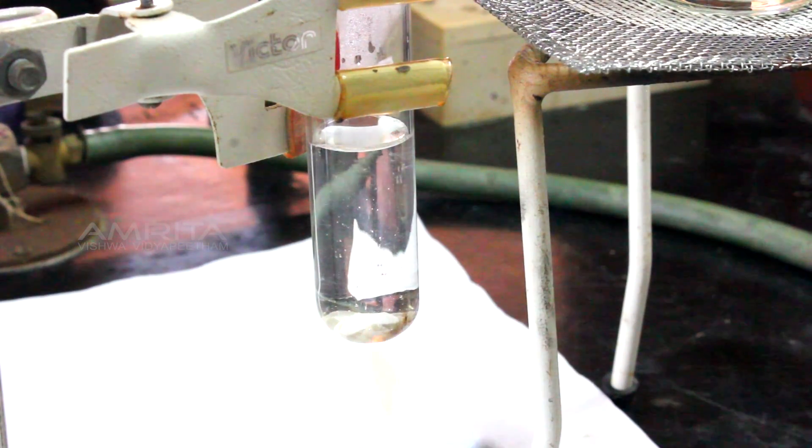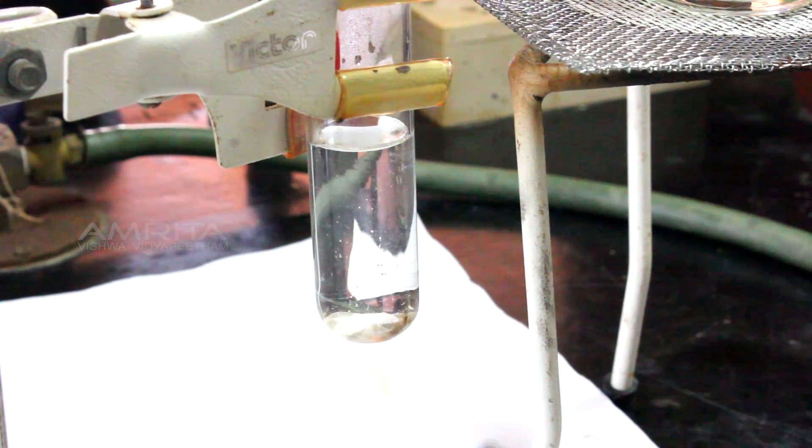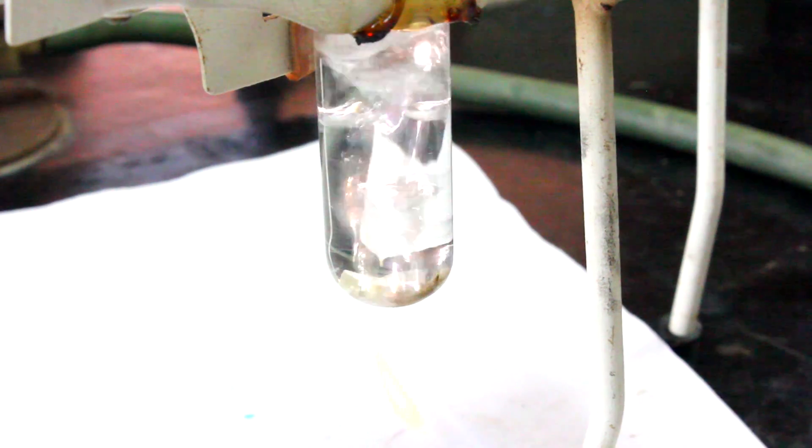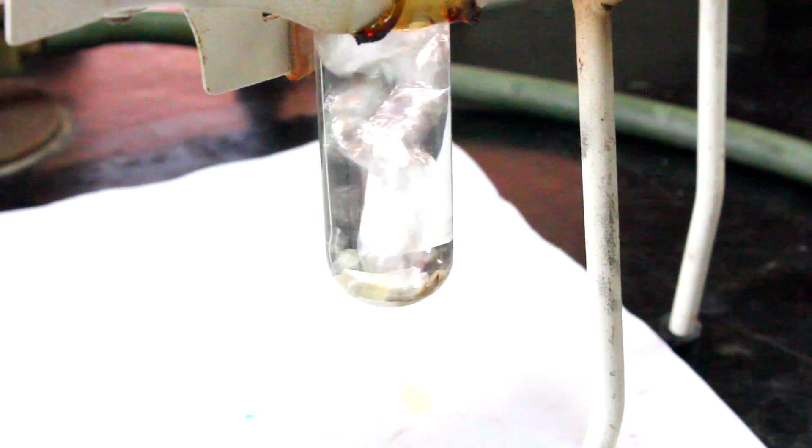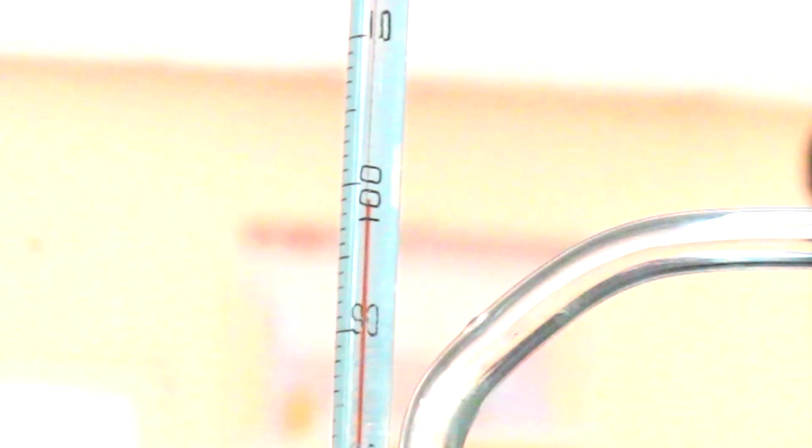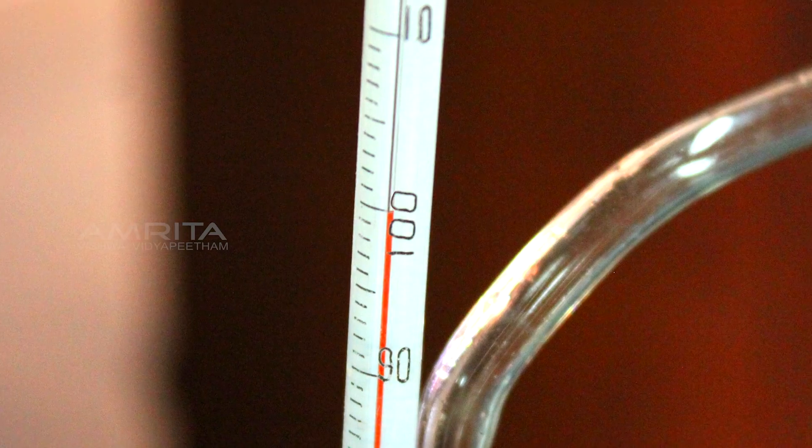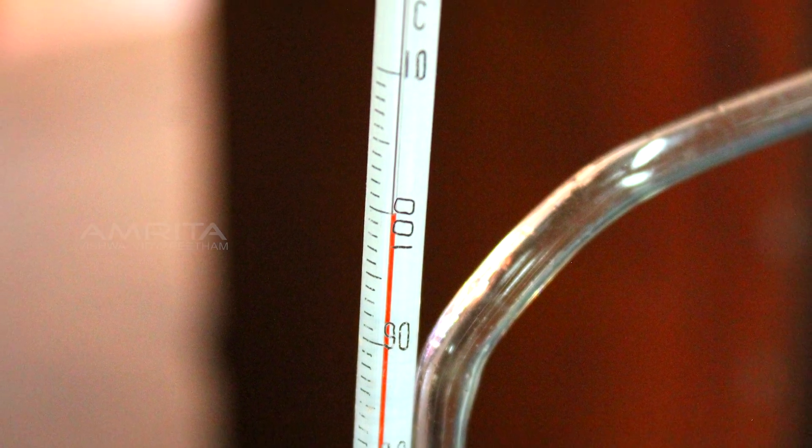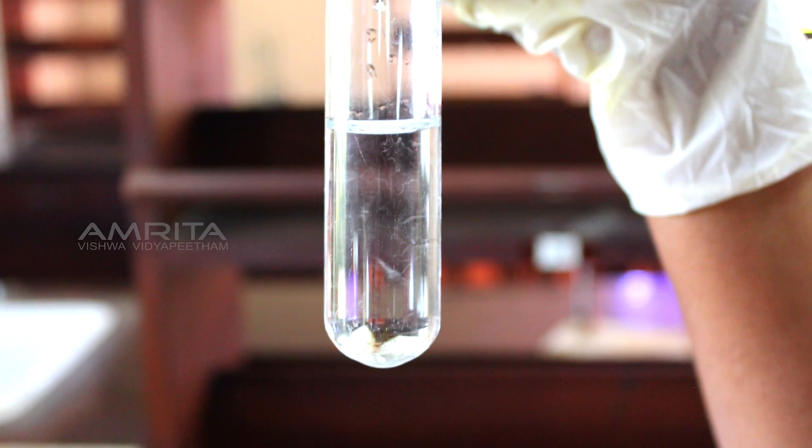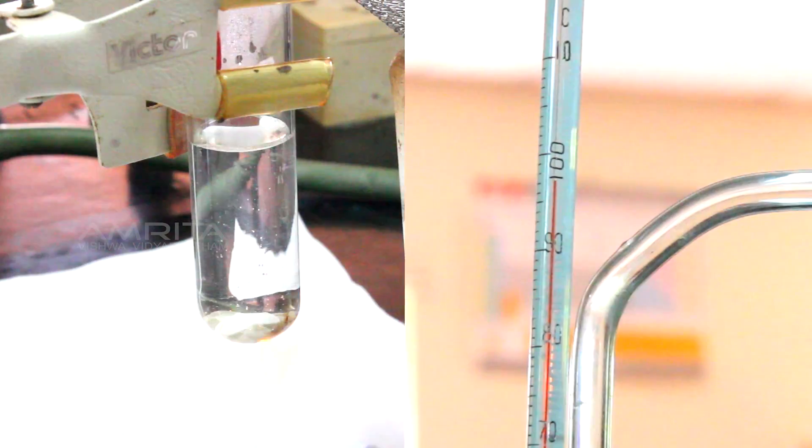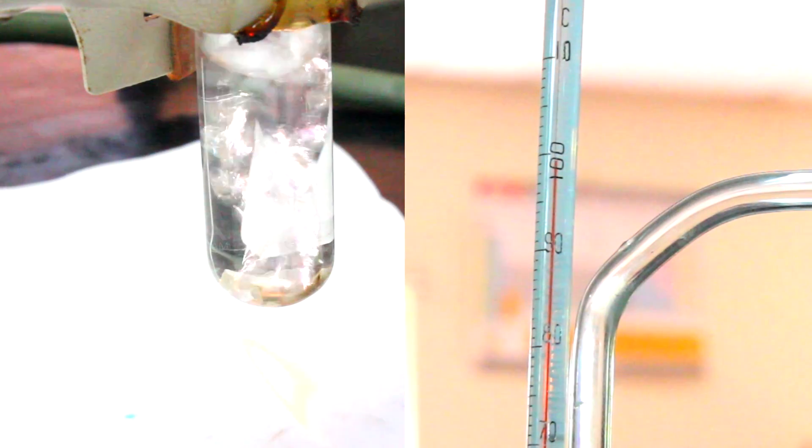Continue to heat the water till the temperature becomes constant and the water continues boiling. Now note down this constant temperature T2. We can determine the boiling point of water by taking the mean values of these two temperatures T1 and T2.